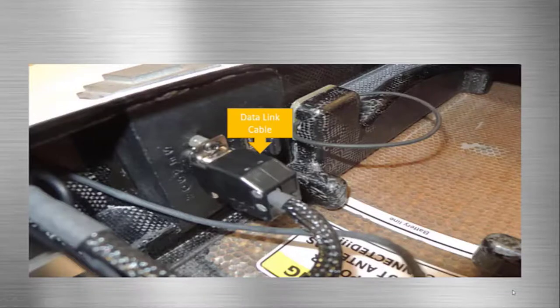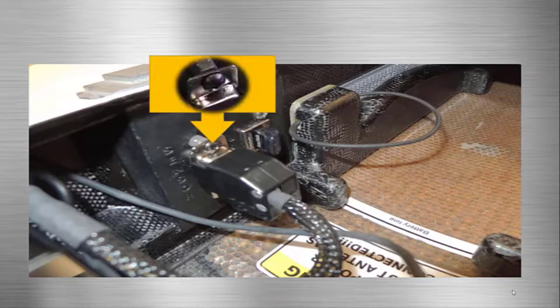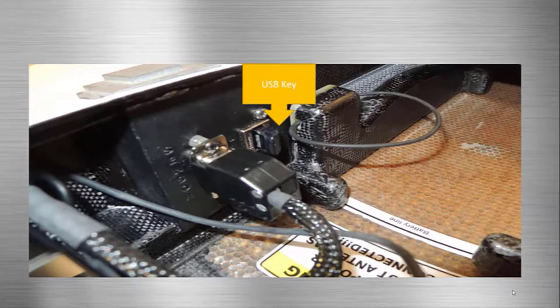Looking inside the sensor bay, you should now plug in the data link cable to its port. Make sure to screw in the hex screw that secures the data link cable using a hex key. Finally, always make sure that the USB key is installed as it holds the metadata for the Bramore.